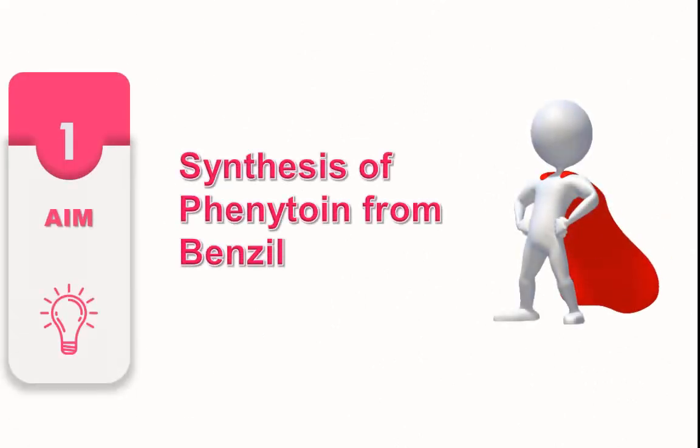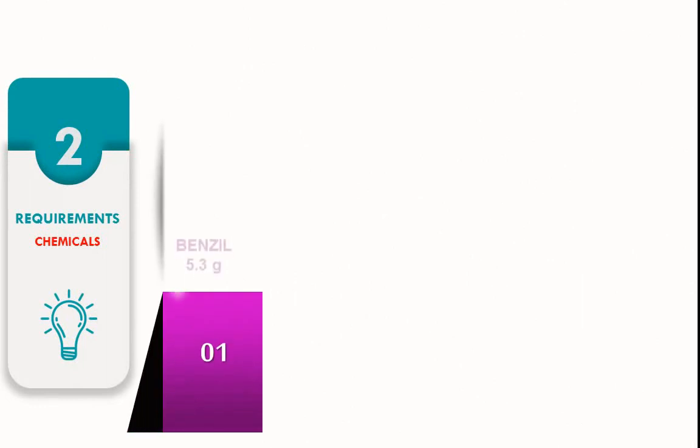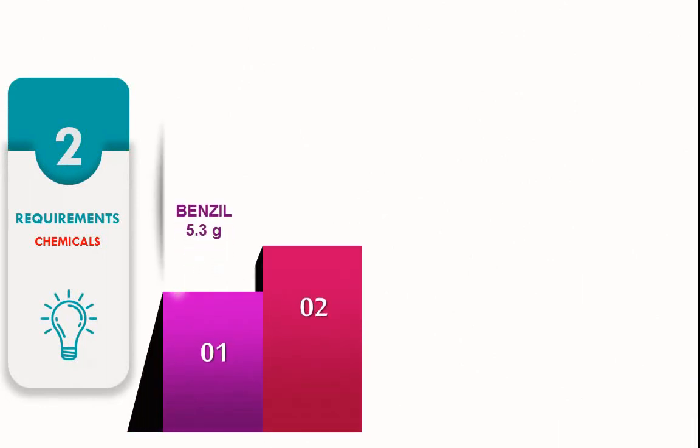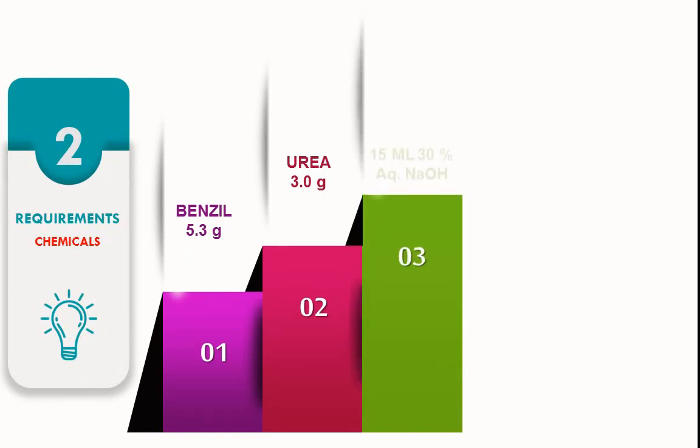First, the aim: synthesis of phenytoin from benzyl. Second, requirements. The chemicals required are benzil 5.3 gram, urea 3 gram, 15 ml of 30 percent aqueous NaOH, ethanol 75 ml, and concentrated hydrochloric acid.